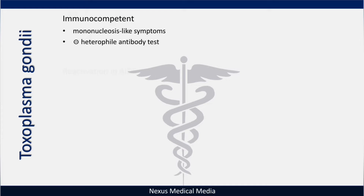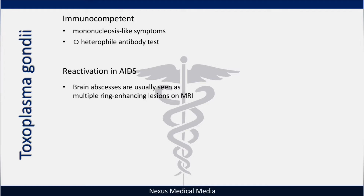The next condition is in immunocompromised individuals, such as in a reactivation of AIDS. These patients typically have brain abscesses, usually seen as multiple ring-enhancing lesions on MRI, as you can see with these rings shown here.